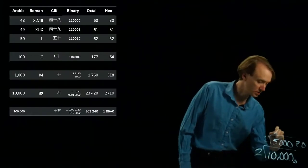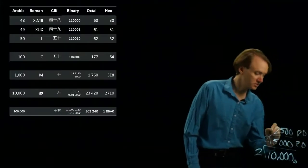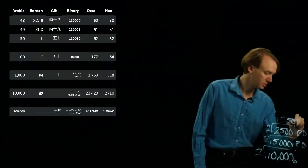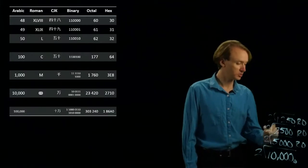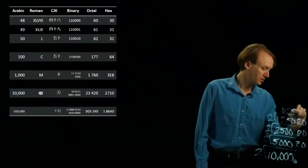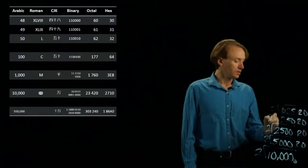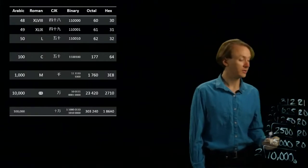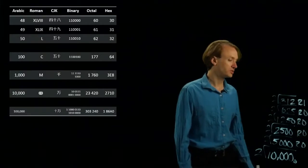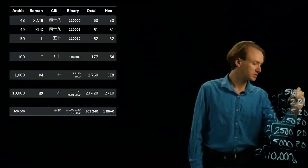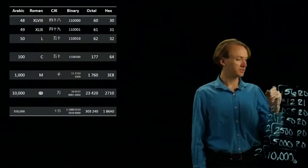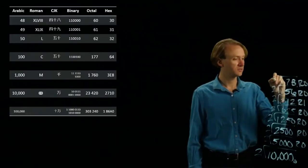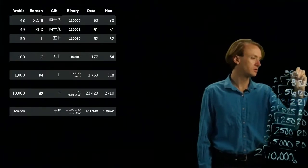5,000 divided by 2 should give me 2,500 remainder 0. 2,500 divided by 2 gives me 1,250, still remainder 0. 1,250 divided by 2 gives me 625 remainder 0. Now 625 divided by 2 will give me 312 remainder 1. 312 divided by 2 will give me 156 remainder 0. 156 divided by 2 will give me 78 remainder 0. 78 divided by 2 will give me 39 remainder 0.